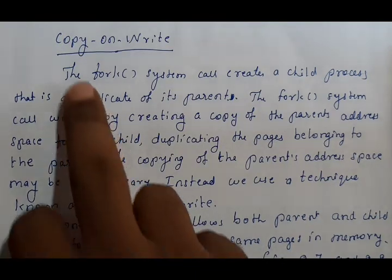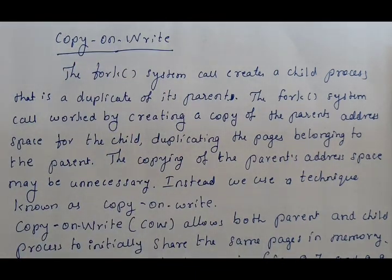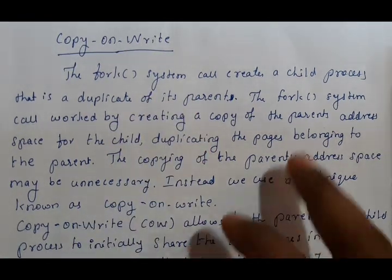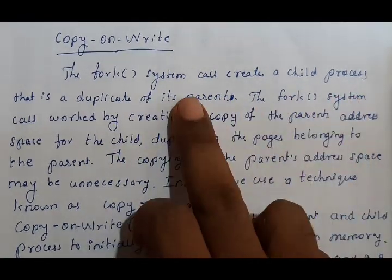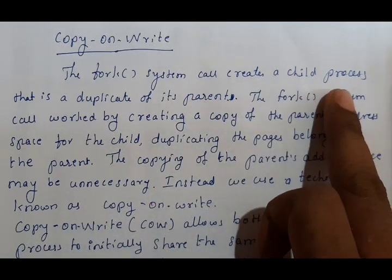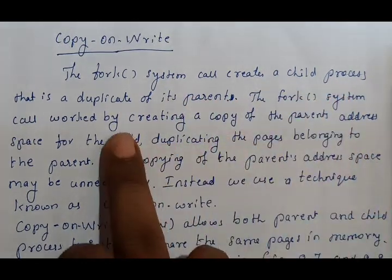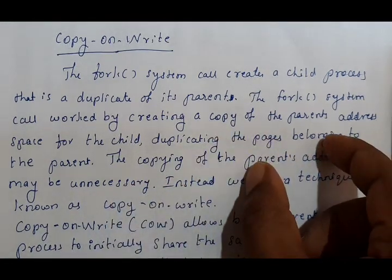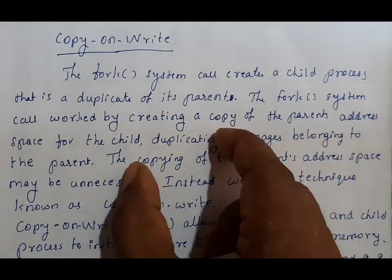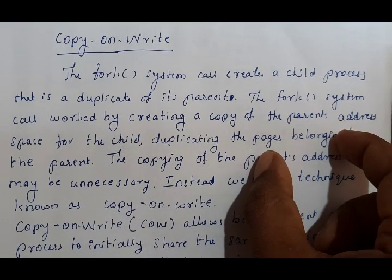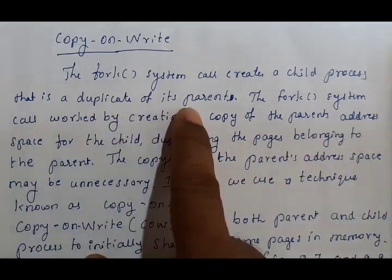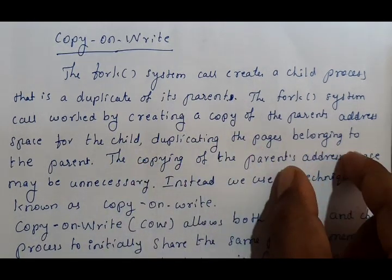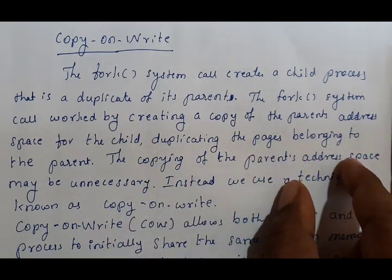Next we'll study Copy-on-Write. The fork() system call creates a child process. There is a parent process and a child process — the child is a duplicate of its parent. The parent process and child process are both the same.